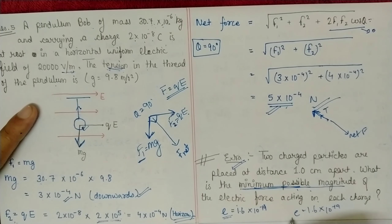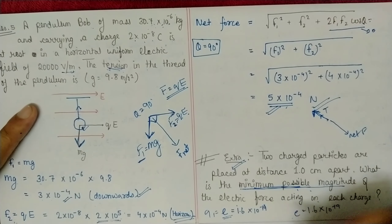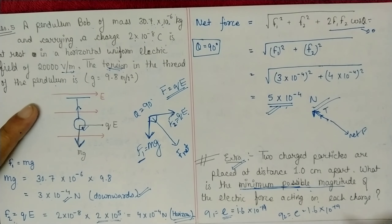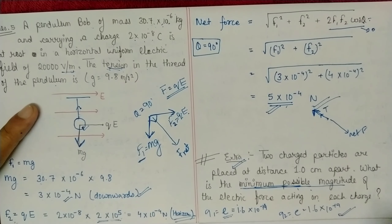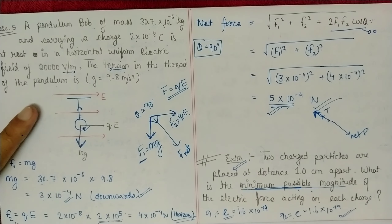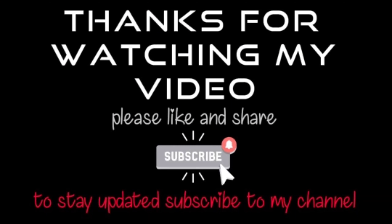Set both Q₁ and Q₂ equal to the electron charge (1.6 × 10⁻¹⁹ C) and apply Coulomb's formula to get the minimum possible electric force. That's all for this video — thank you.